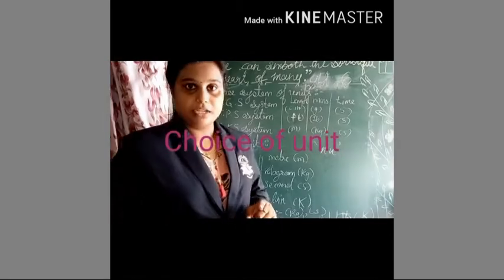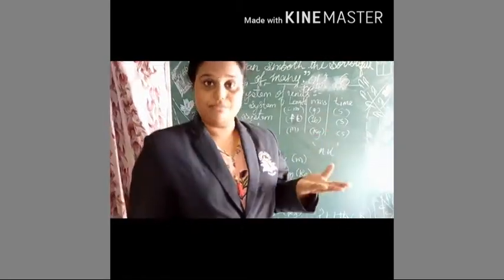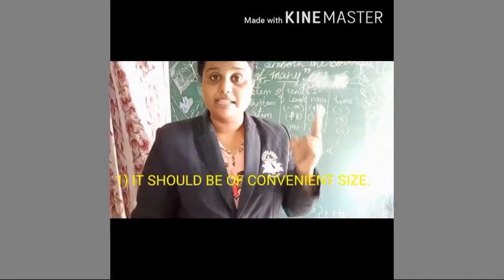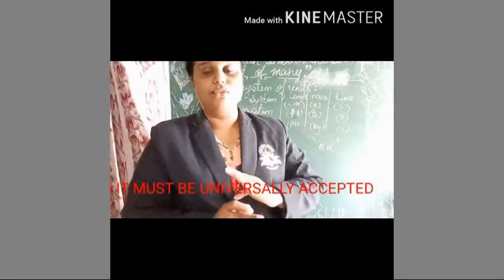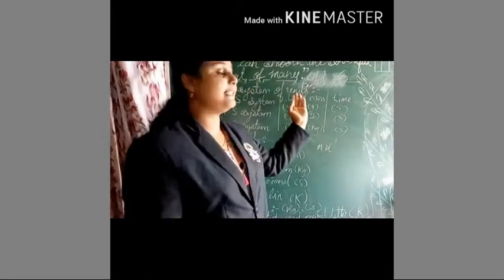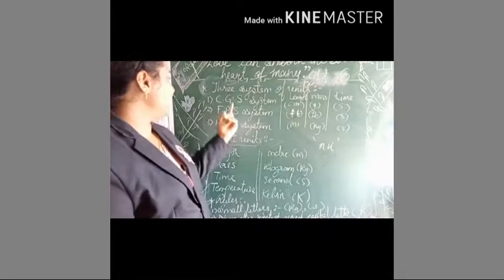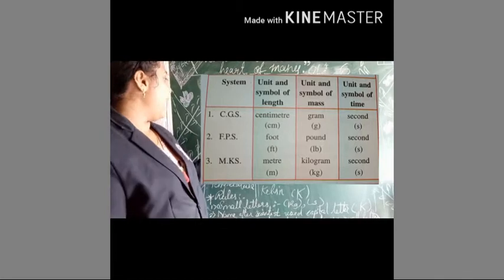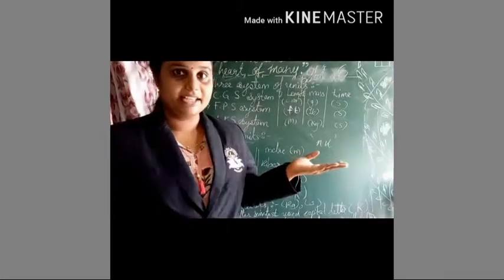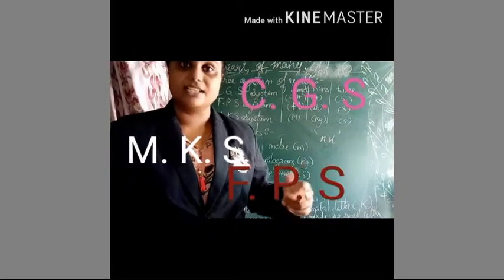Next is the choice of unit. For a unit to be valid, it should be of a convenient size and it should be universally acceptable. There are three systems of unit: CGS, FPS, and MKS.